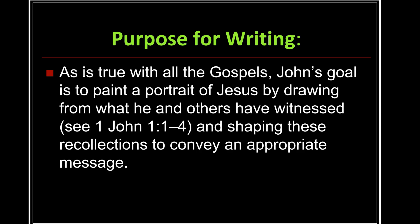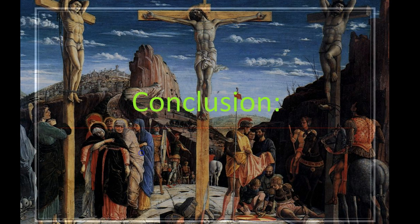As we explore the purpose of writing, as is true with all the gospels, John's goal is to paint a portrait of Jesus by drawing from what he and others have witnessed, and shaping these recollections to convey an appropriate message. In the case of John, we have the author's own words to guide us. John is writing so the readers might believe that Jesus is the Christ, the Son of God, and by believing, have life in his name. In accomplishing his purposes, John emphasizes several truths about Jesus' person and his works. That concludes our first mini-lecture on the background to the book of John. In lecture two, we will turn to explore the themes that John presents in his gospel.